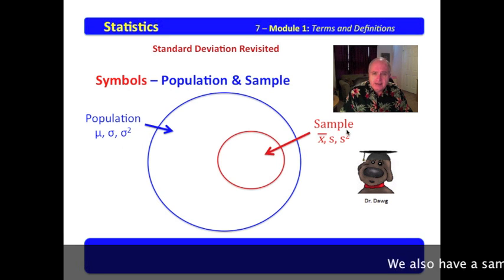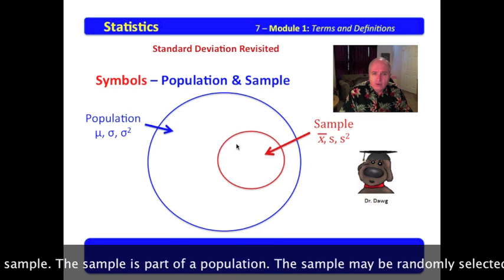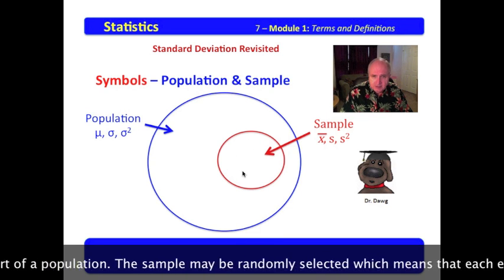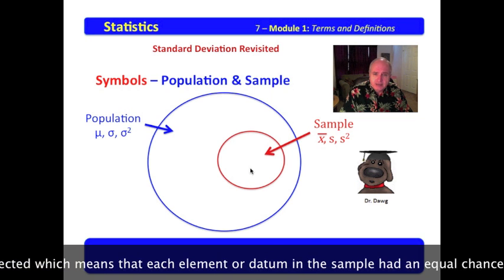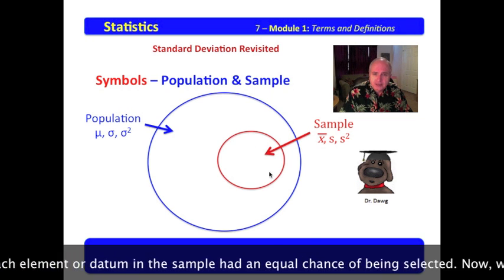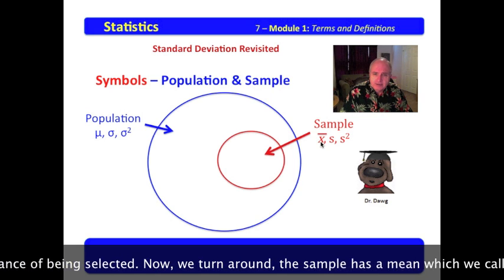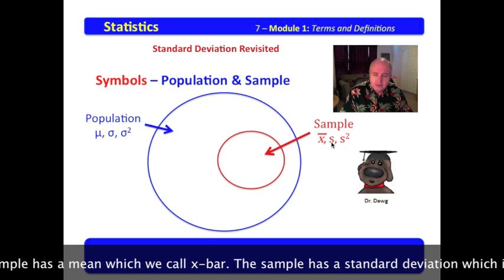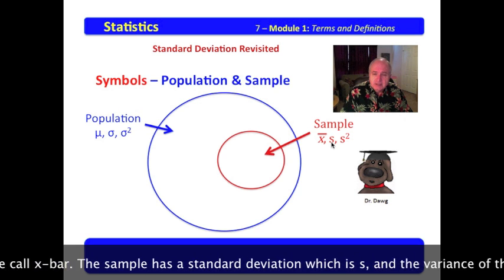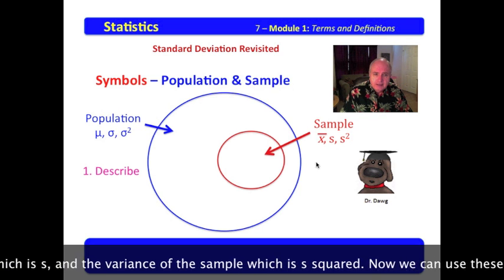We also have a sample. A sample is part of a population. The sample may be randomly selected, which means that each element or datum in the sample had equal chance of being selected. Now, we turn around. The sample has a mean, which we call x-bar. The sample has a standard deviation, which is s, and the variance of the sample, which is s squared.